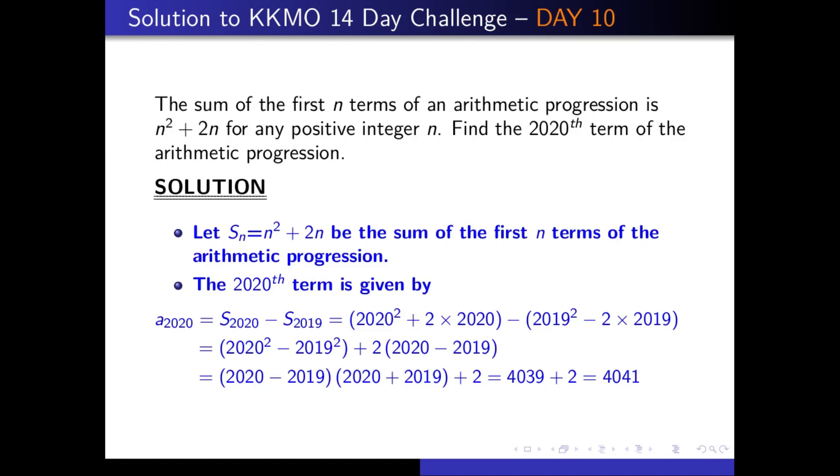You'll notice that in the second-to-last equation, we used the fact that 2020² - 2019² is a difference of two squares. So the final answer for this is 4041.